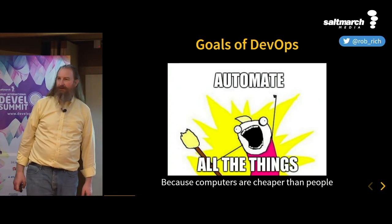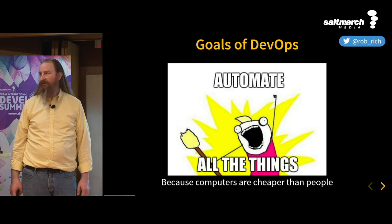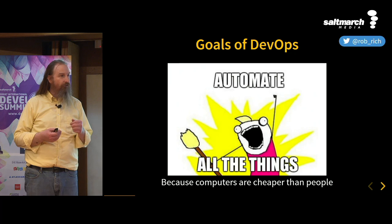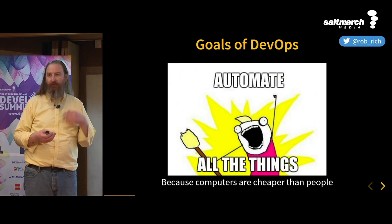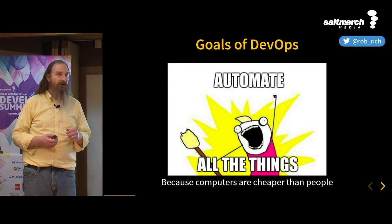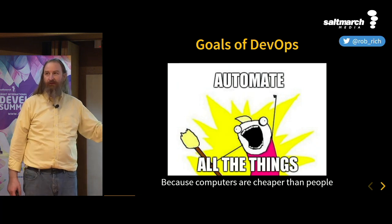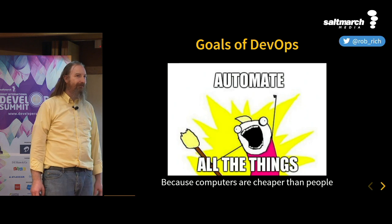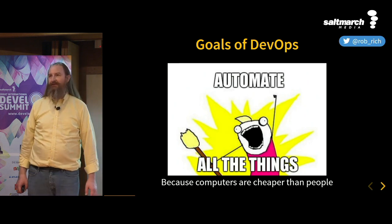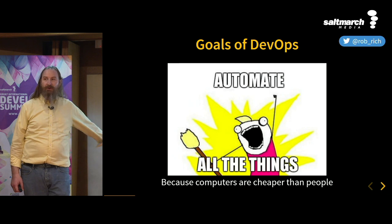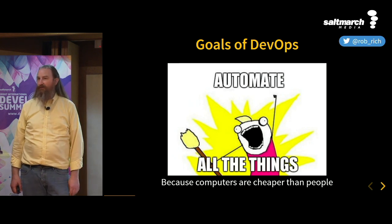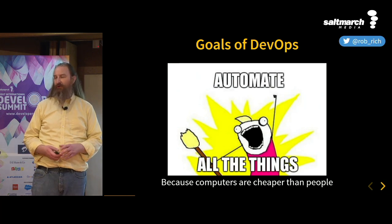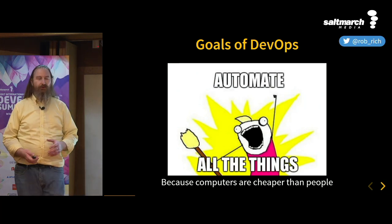Computers are cheaper than people. That wasn't always the case. There was a time when we'd take our punch cards and flip through them, thinking through the process in our head — so we didn't waste time on that really expensive computer we were probably using in the middle of the night. But that day is not today. Today it is faster to run the tests on the server than to try and think through all the scenarios again. We create this automation because computers are cheaper than people.